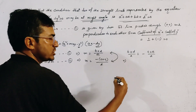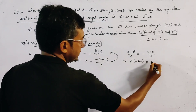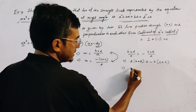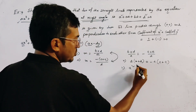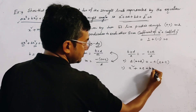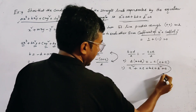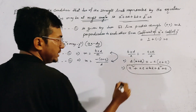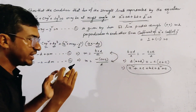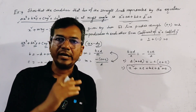By cross multiplication we get b(b + d) = -a(a + c), which expands to b² + bd = -a² - ac. Rearranging, we get the required result: a² + ac + bd + b² = 0. This is the required condition, and it is a very interesting problem from the topic of pair of straight lines.